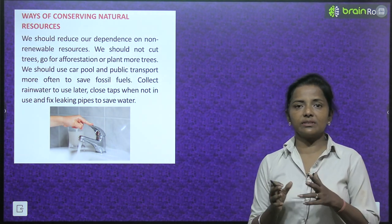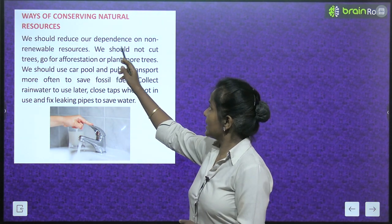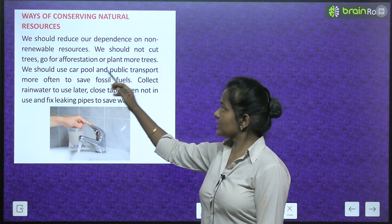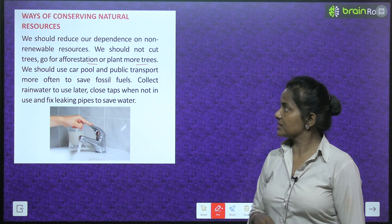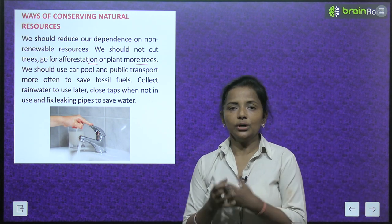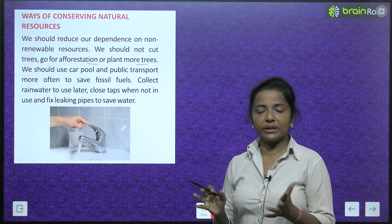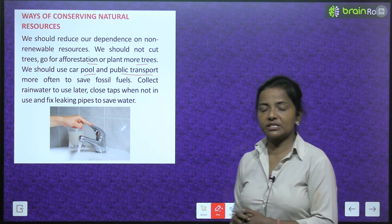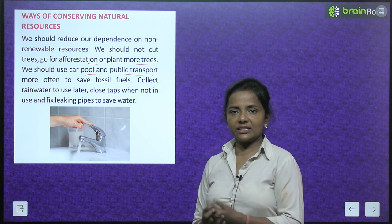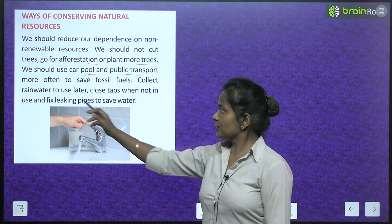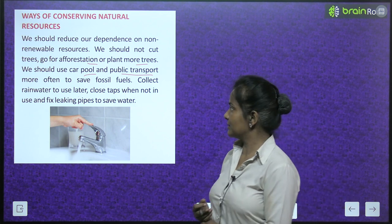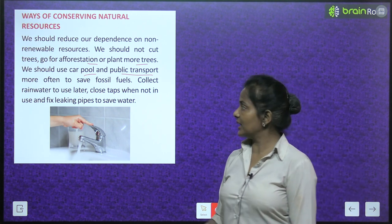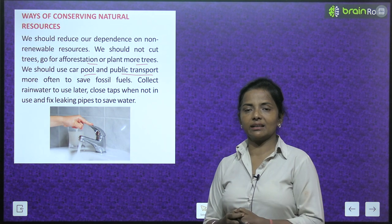Ways of conserving natural resources: we should reduce our dependence on non-renewable resources. We should not cut trees — go for afforestation and plant more trees. Use carpool and public transport more often to save fossil fuels. Collect rainwater for future use. Close taps when not in use and fix leaking pipes to save water.